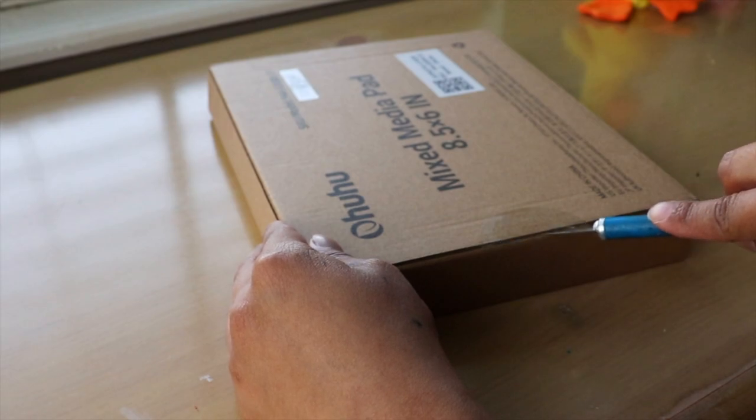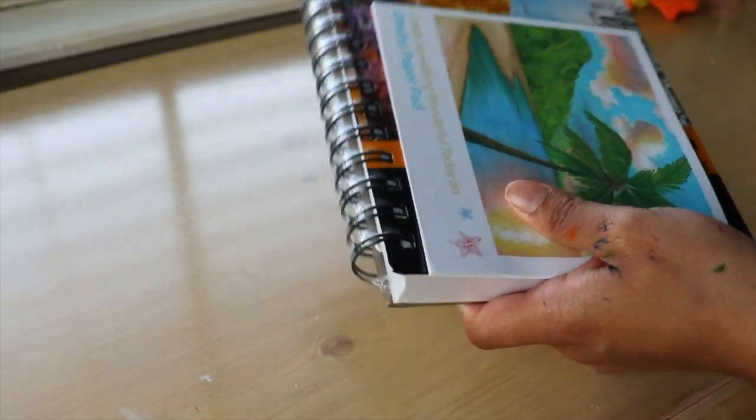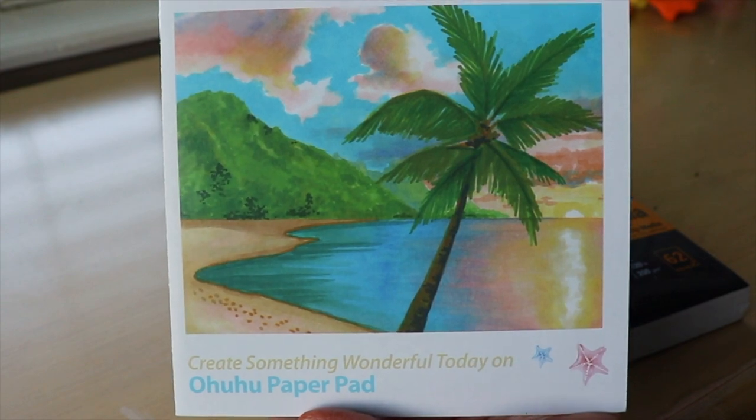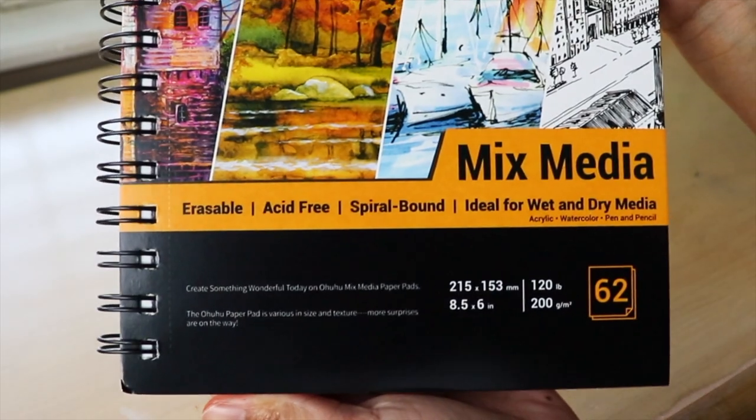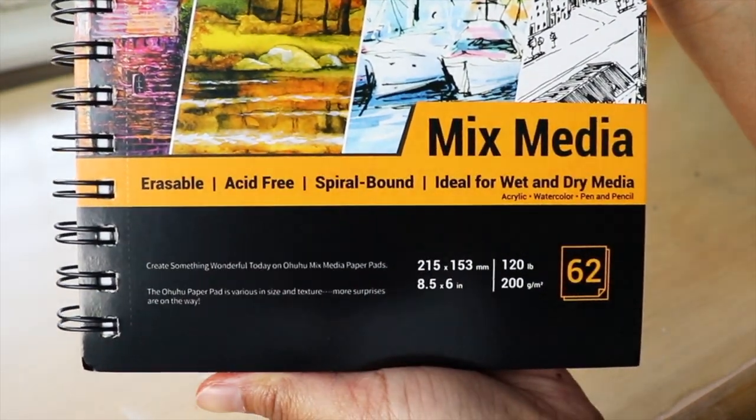This is an 8 1/2 by 6 inch, 120 pound, 62 page mixed media sketchbook. Inside the package, you receive this instructional booklet explaining how to use this plastic sheet in between each page, as well as how to tear out pages nice and neatly.